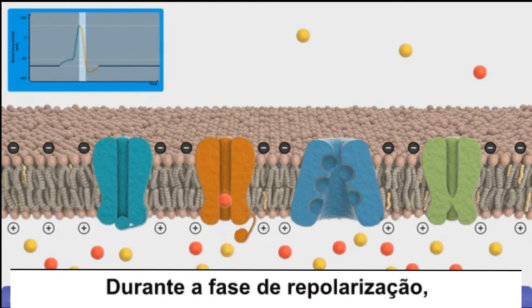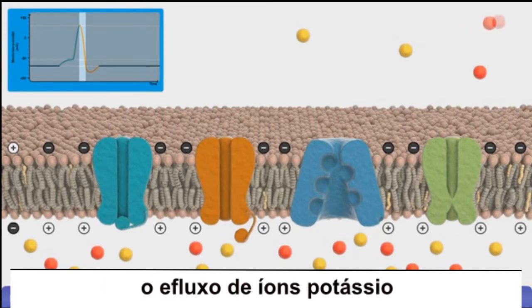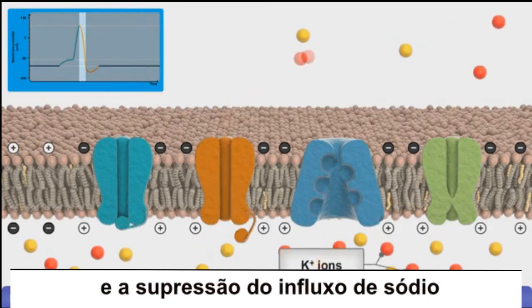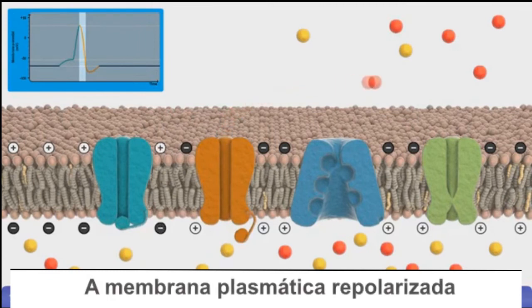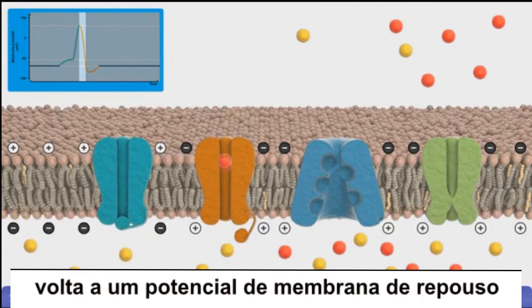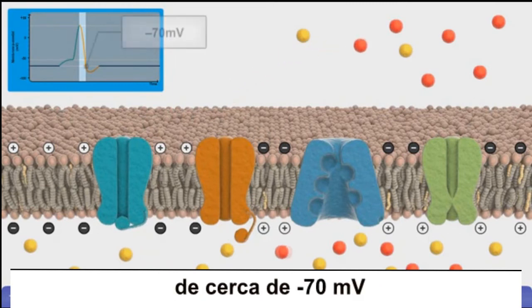During the repolarization phase, an efflux of potassium ions and the suppression of sodium ion inflow causes the potential difference across the membrane to decrease. The plasma membrane repolarizes back to a resting membrane potential of about minus 70 millivolts.